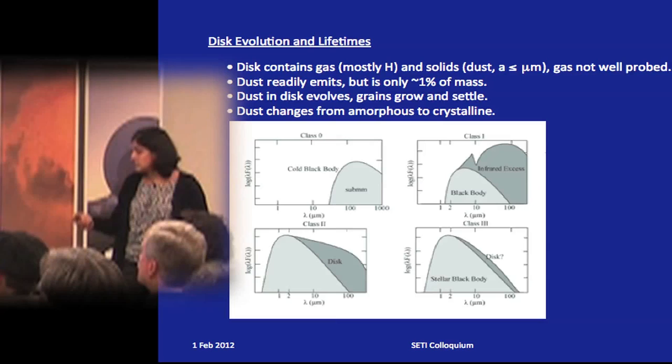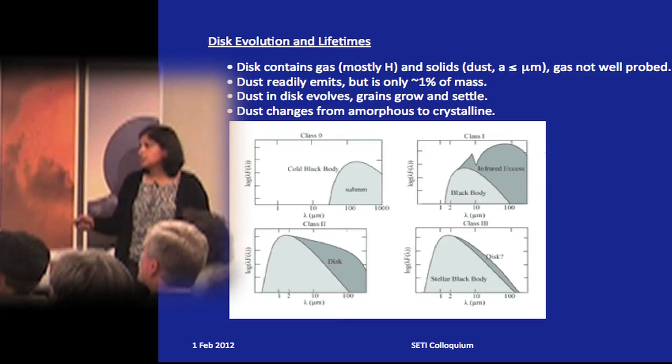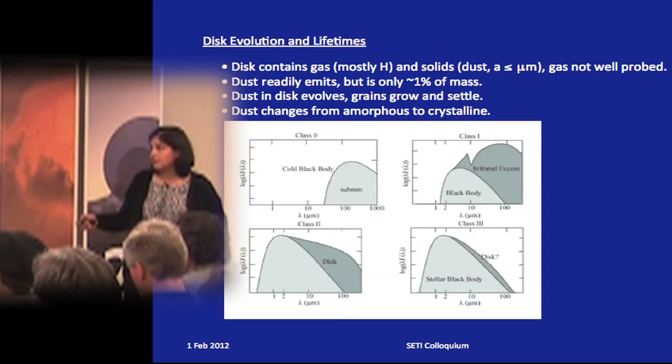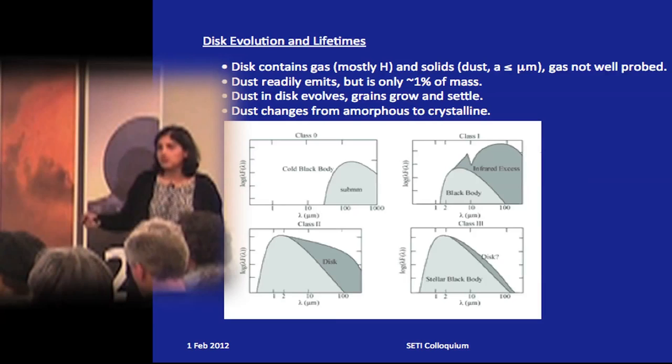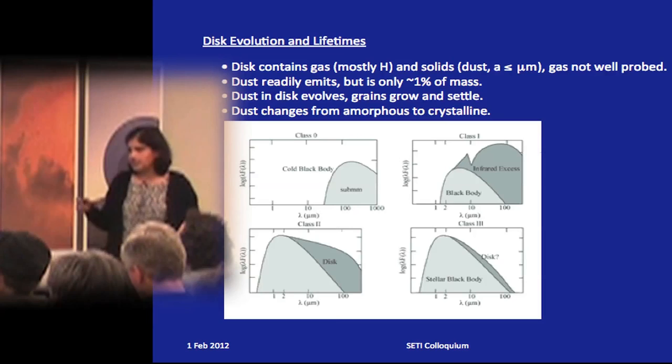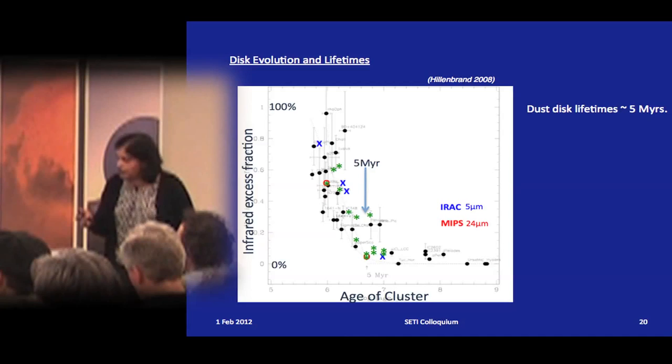The embedded stage is believed to last about half a million to a million years — harder to observe and age accurately. Class 2 objects are typically a few million years old. Class 3 objects may be debris discs that have already formed planets and could be anywhere from tens of millions of years old onwards. The most important observable from my point of view is the disc dust lifetime.